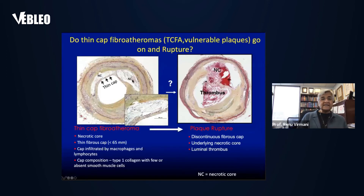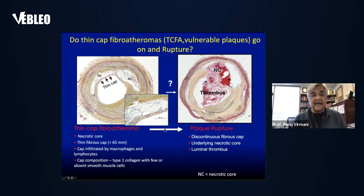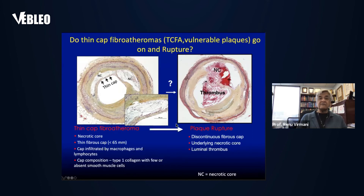We have identified that thin cap fibroatheroma is a vulnerable plaque that we can recognize, which goes on to rupture. Multiple studies presented at the American Heart Association confirm this correlation. Thin cap fibroatheroma is recognized by having a necrotic core, a thin fibrous cap less than 65 microns, a cap infiltrated by macrophages, and cap composition of collagen type 1 — very similar to plaque rupture except there is no discontinuity of the cap.